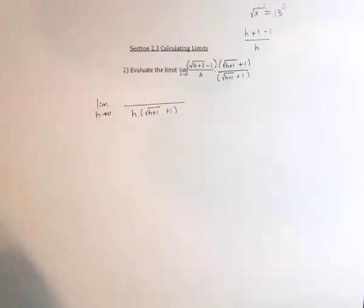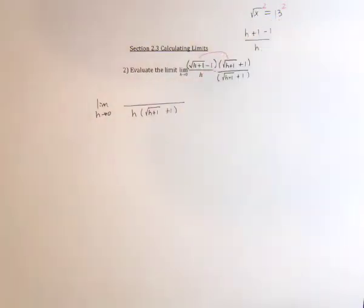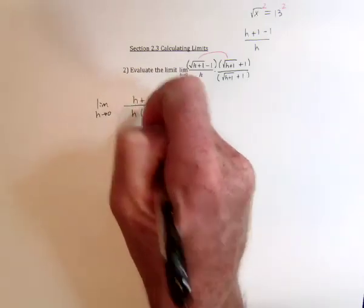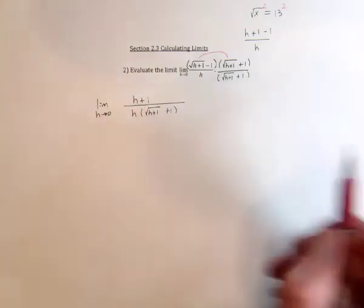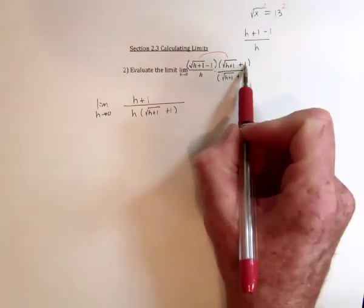And then as far as multiplying conjugates, you only need to multiply the first term times the first term, which is going to get rid of the radical, leaving only h plus 1. And the middle term and the outer terms are the same except they're the opposite sign, so they're going to cancel.